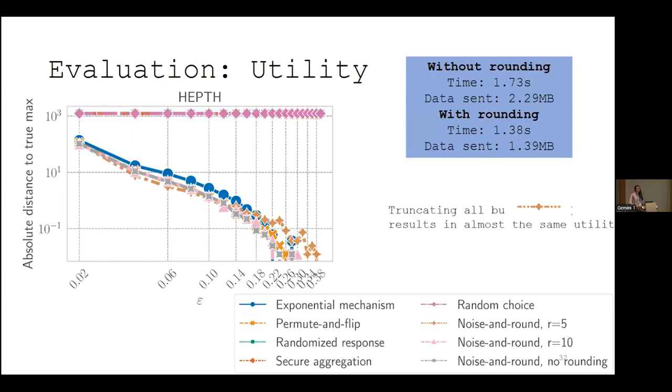And finally, a few words on the utility results. These are comparisons using benchmarking data sets for selection with about 4000 data points and we're reporting the error as the difference between the true maximum and the value of the index reported by our mechanism. To compare to the previous slide, you can look at the blue box and see what the time and communication requirements are when rounding until only 5 bits remain or without rounding which requires more time and communication. And we can also compare to other mechanisms both in the central model that would be the exponential mechanism and permute and flip with stronger trust assumptions, and the local model with weaker trust assumptions like randomized response, which has a line kind of on top right underneath random choice, so that gives us very low utility. We can see that truncating all but 5 bits, which is the brown line with the diamond shaped markers, gives very similar utility to the mechanisms in the central model.